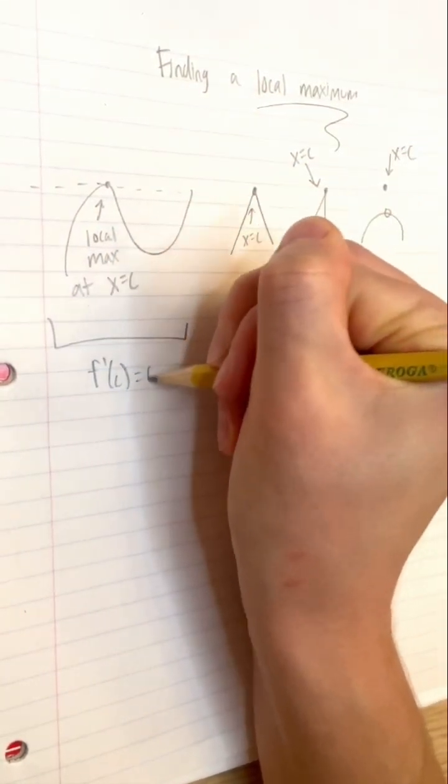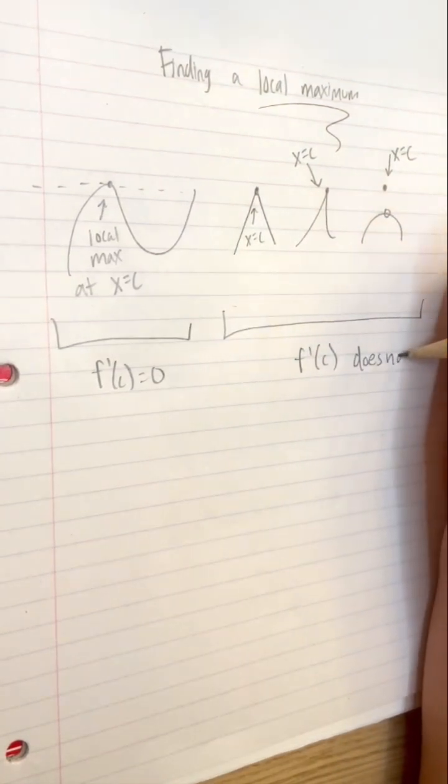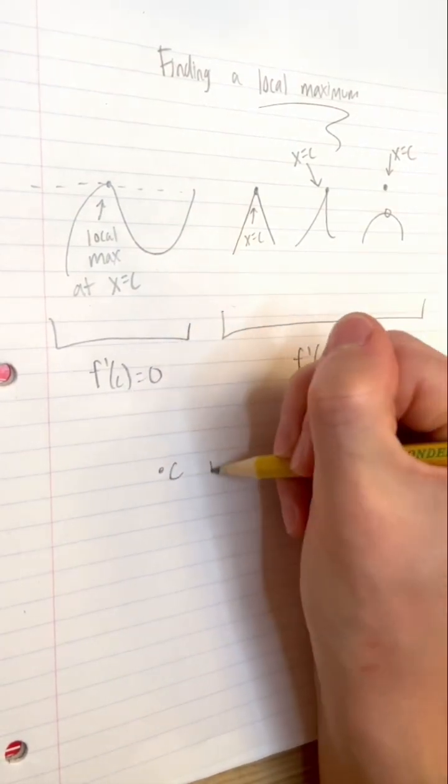For all other cases shown here, the derivative of the function does not exist at x equals c. When either of these two things are true for x equals c, we say that c is a critical number.